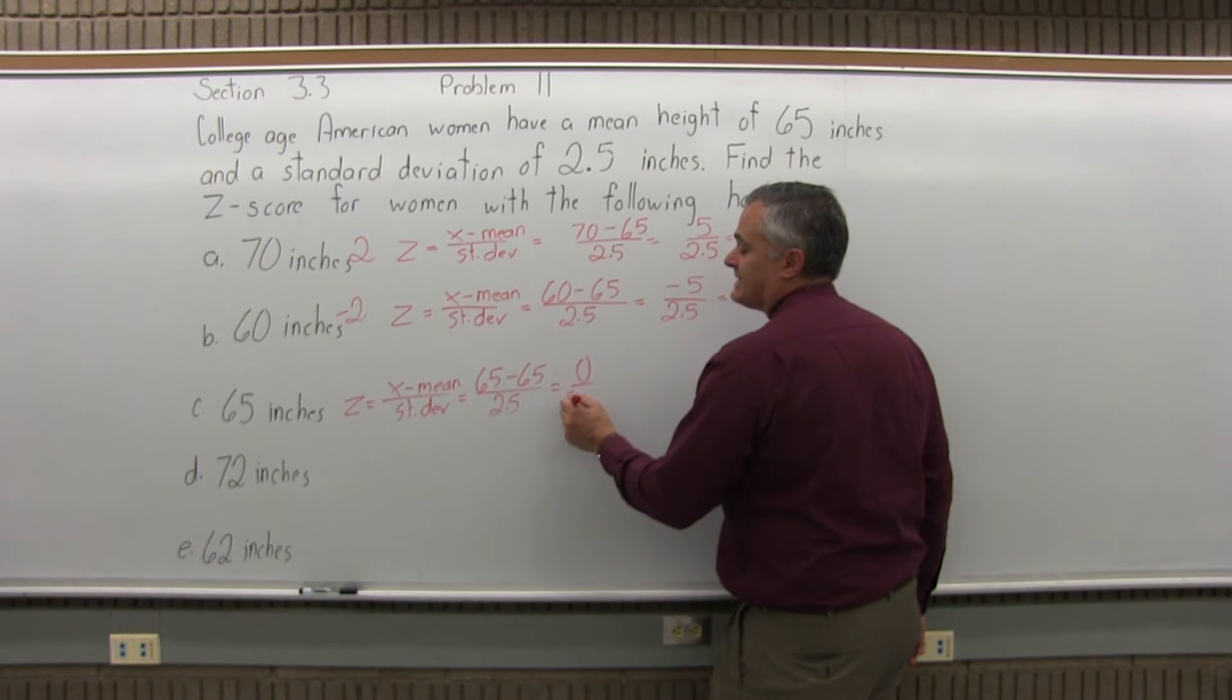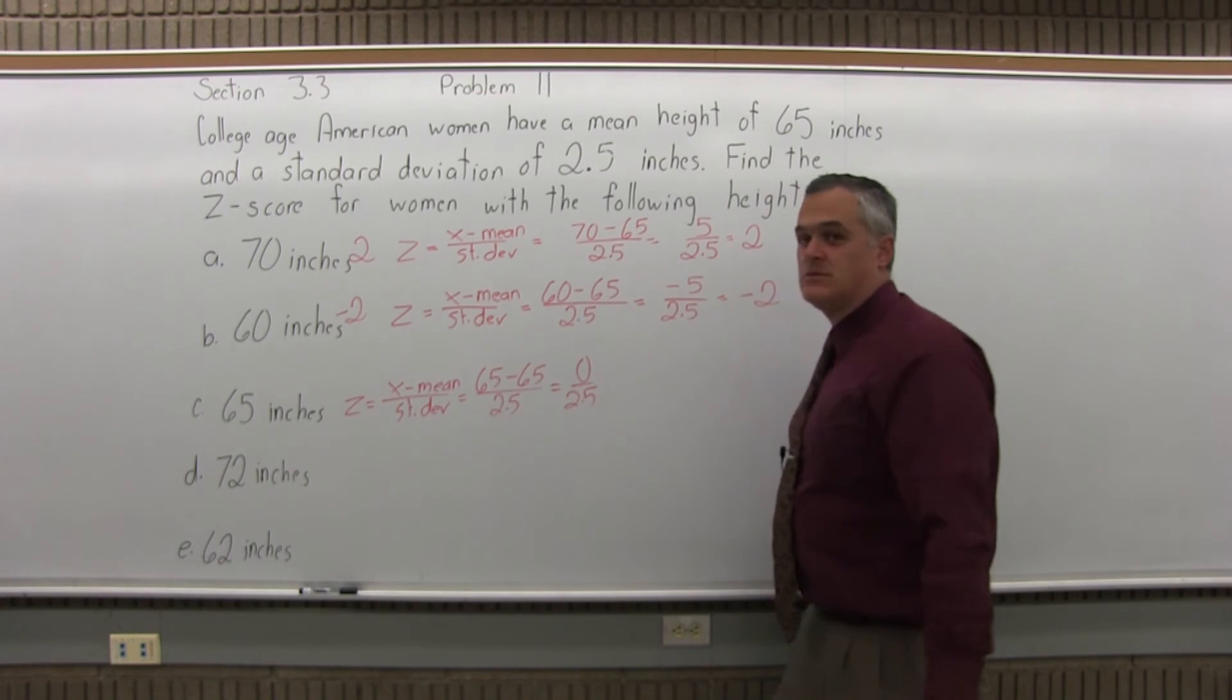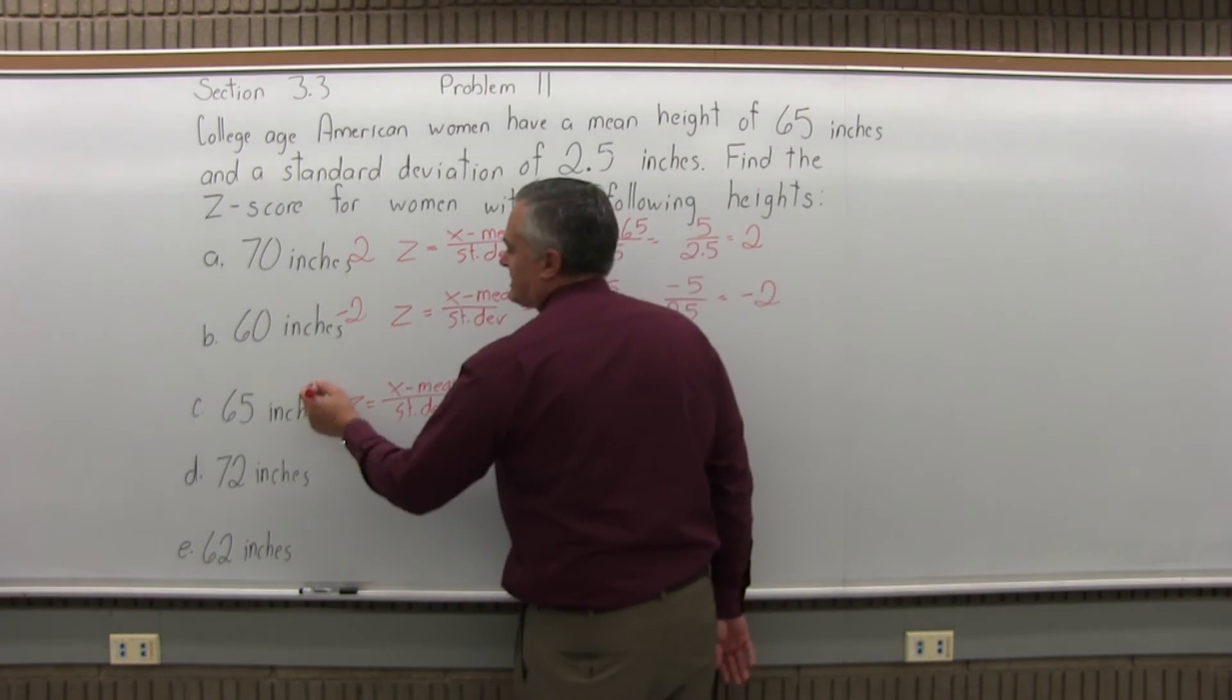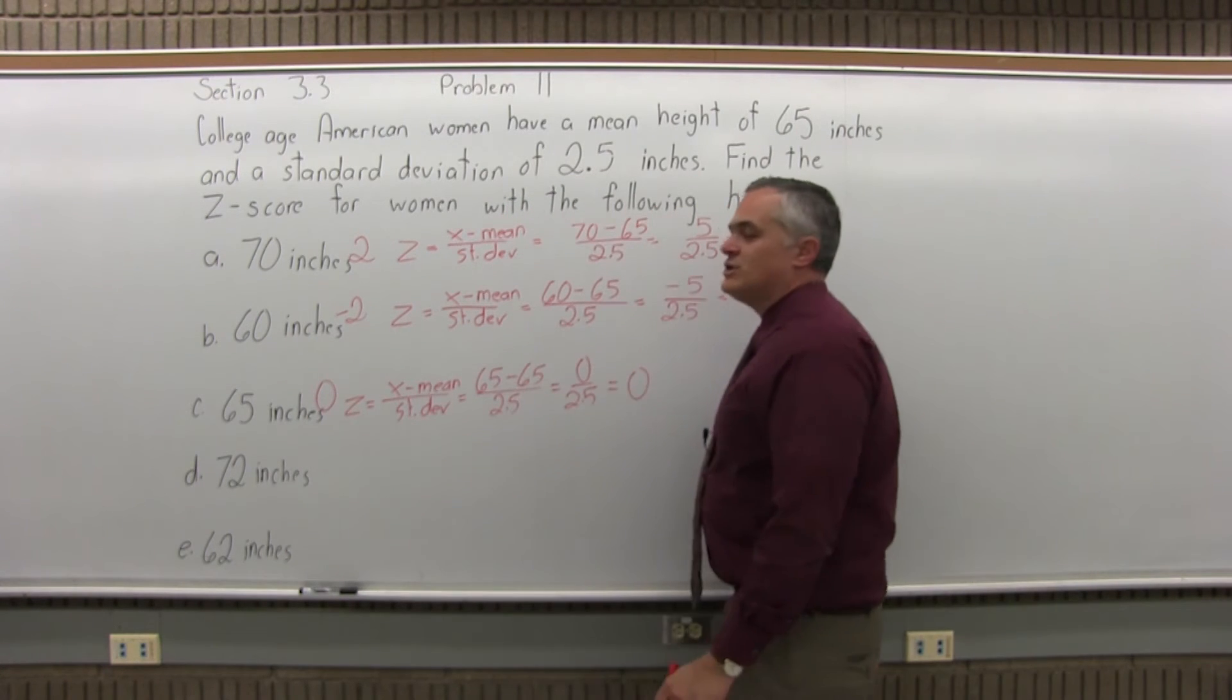In the numerator, 65 minus 65 is 0. So 0 divided by 2.5 is 0. So a woman that's 65 inches tall has a z-score of 0.